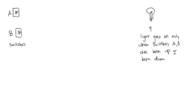Suppose we have the following setup: a pair of switches on the left-hand side, A and B, which can either be turned on or off — up or down. Over here we've got a light bulb. The light bulb will only go on when switches A and B are in the same position, so they both have to be up or they both have to be down.